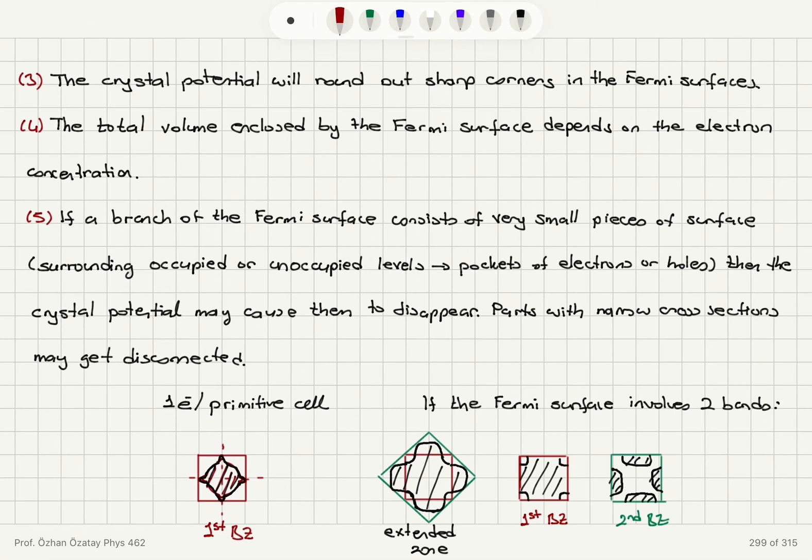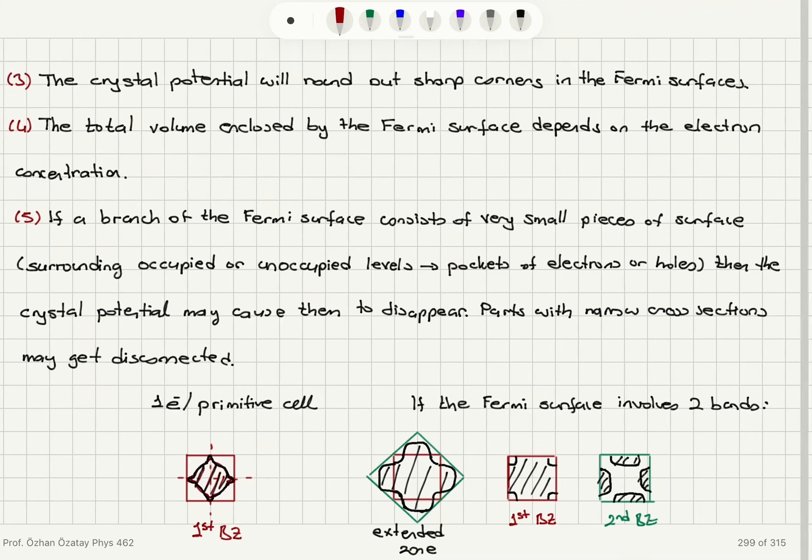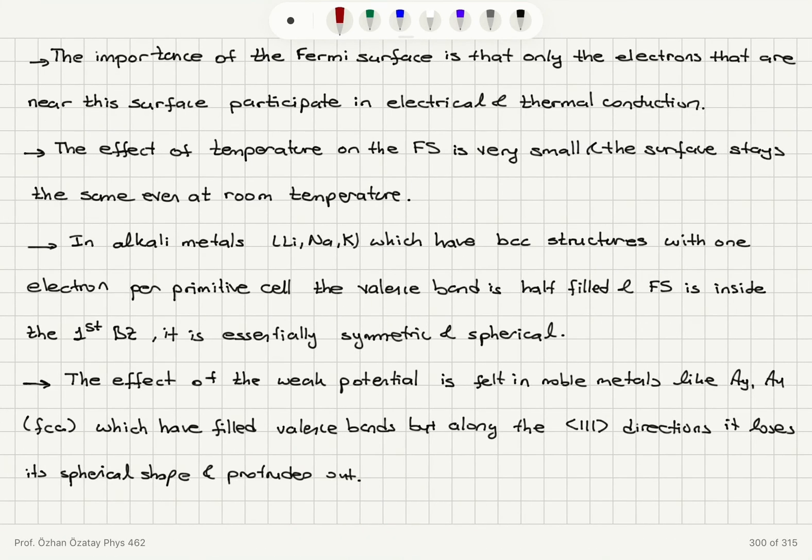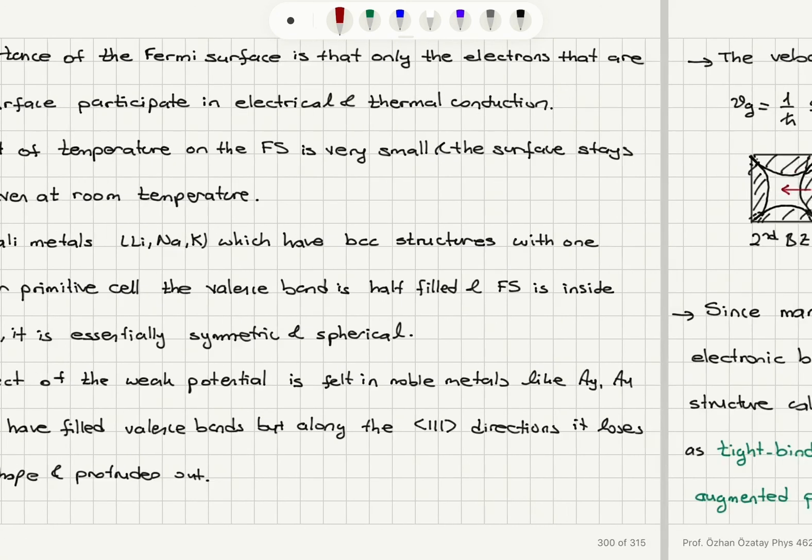And we have seen some examples here. The Fermi surface, the electrons close to the Fermi surface are very important because they are the ones that will participate in the transport processes, thermal and electrical. It's essentially independent of temperature. So we can consider the Fermi surface at room temperature to be very similar to the one at zero Kelvin. And we talked about the effect on alkaline metals and face-centered cubic noble metals as an example.